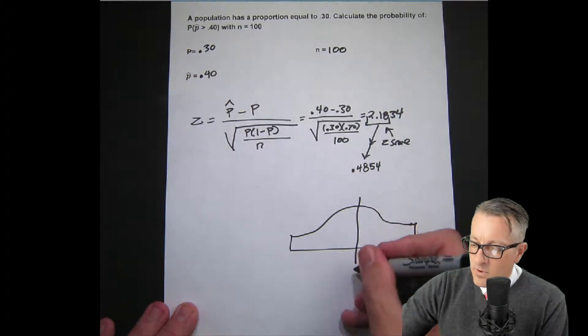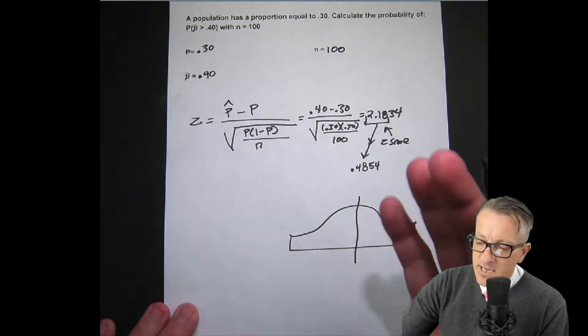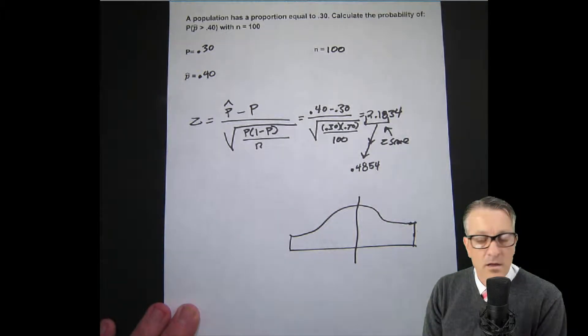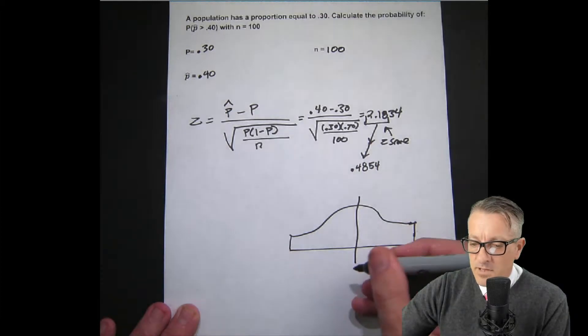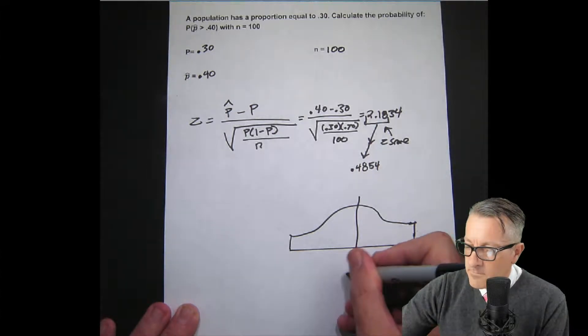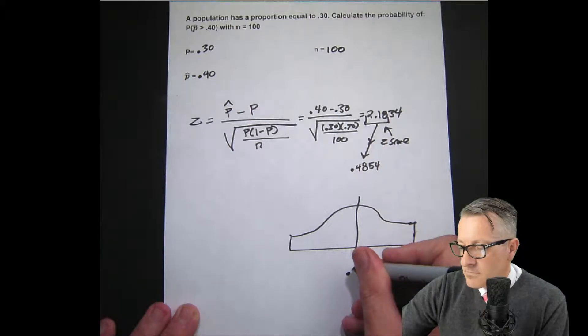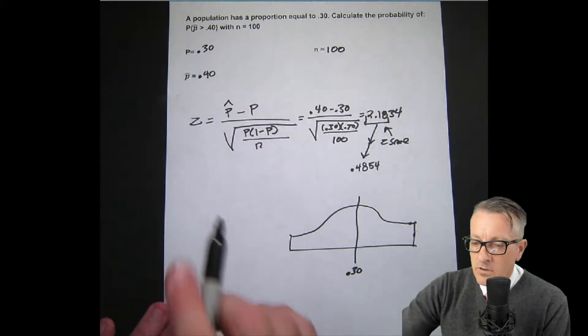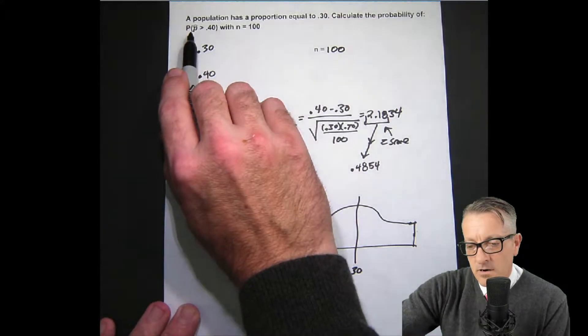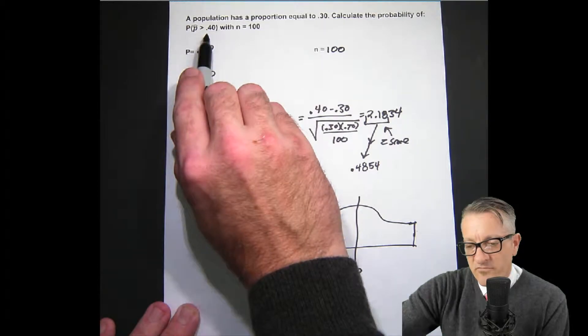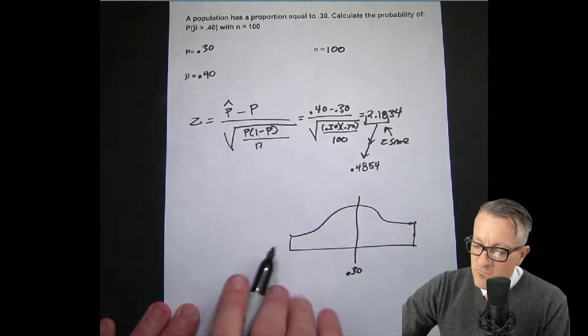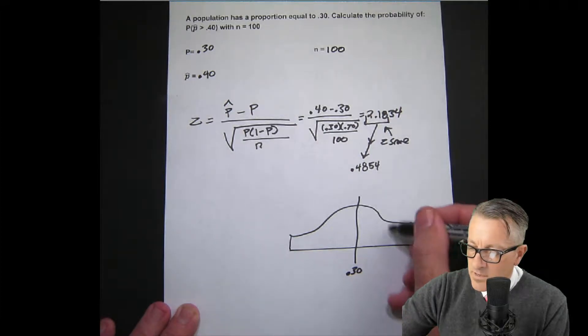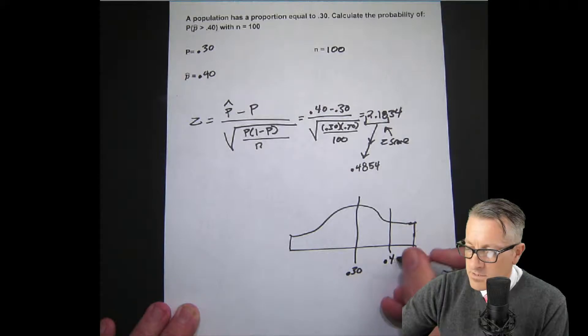In the middle, I'm putting the population parameter down as our landmark, so we're going to say our population parameter right here, 0.30. Then we need to figure out what we're working with. Our problem says our sample proportion greater than 0.40, so as we go further along to the right, the number increases. I'm going to put 0.40 right here.